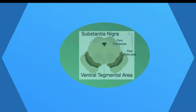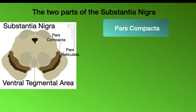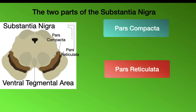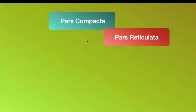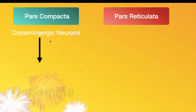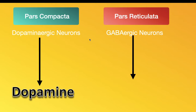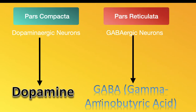The substantia nigra has two parts: the pars compacta, which is the lighter part, and the pars reticulata. The pars compacta is actually black because it contains neuromelanin — that's why it has the black pigment. The pars compacta is made up of dopaminergic neurons, which produce dopamine. The pars reticulata is made up of GABAergic neurons, and they produce GABA, which is also a neurotransmitter. GABA stands for gamma-aminobutyric acid.